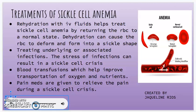Treatments of sickle cell anemia: One treatment option is rehydration with IV fluids, which helps treat sickle cell anemia by returning the RBCs to a normal state. Dehydration can cause the RBCs to deform and form into a sickle shape. Another option is treating underlying or associated infections, as the stress of infections can result in a sickle cell crisis.